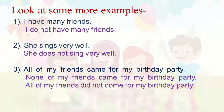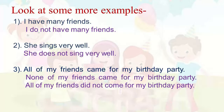Now look at the other example: She sings very well. How will we make it into a negative sentence? She does not sing very well. Why? Because when the sentence is in simple present, we use 'does' for he, she, it, and singular subjects. To make it negative, we use a negative word. Please note that we do not add S or ES with the verb when 'does' is used. So it would be wrong to say 'She does not sings very well.' The correct sentence is: She does not sing very well.